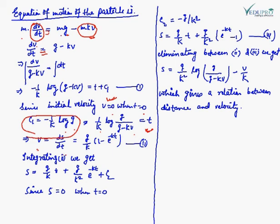Since V is dS/dt and log(G / (G − KV)) = KT, we can solve to get V = (G/K)(1 − e^(−KT)). This is the velocity expression. Now let's integrate this equation to find S.